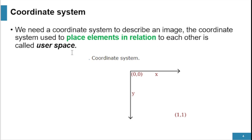Here we have a coordinate system in which the horizontal axis is known as x-axis and the downward axis is known as y-axis. Their origin is (0,0) and the coordinate points are (1,1).